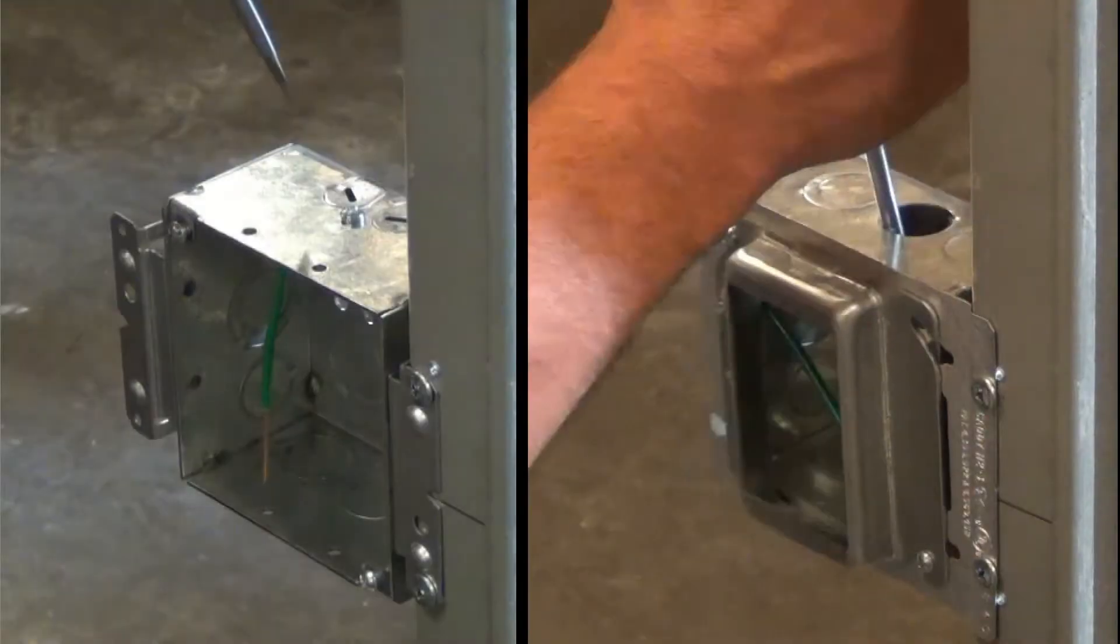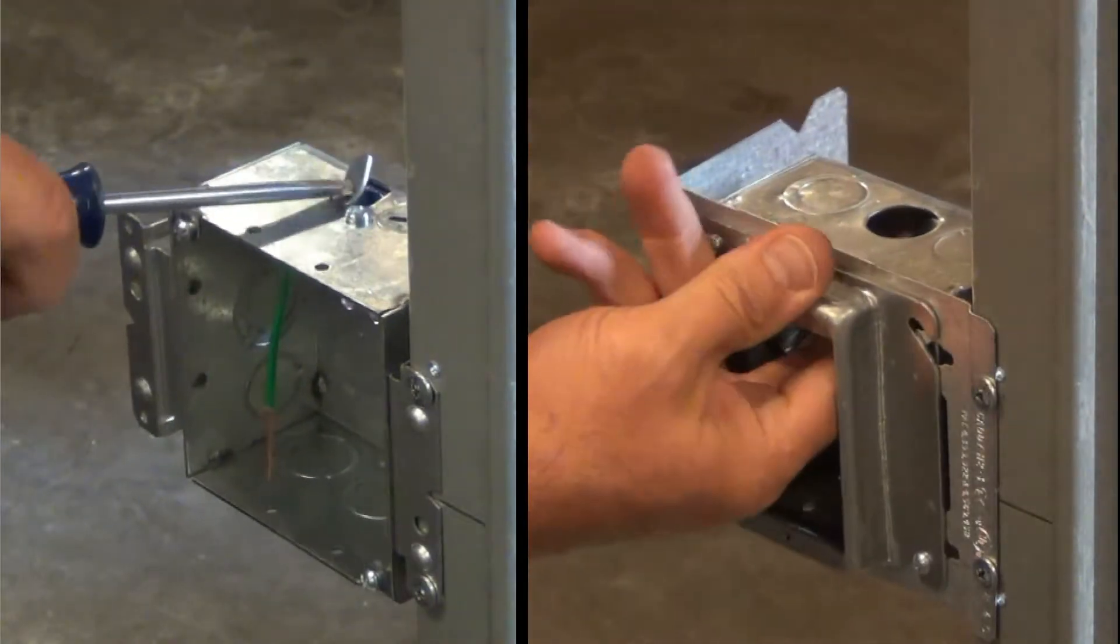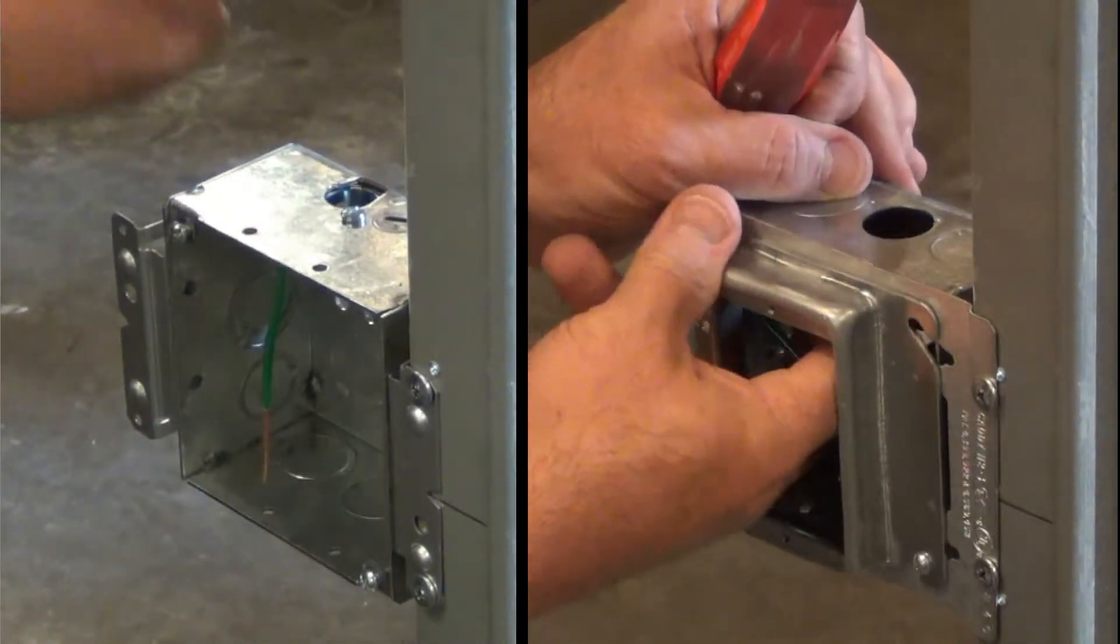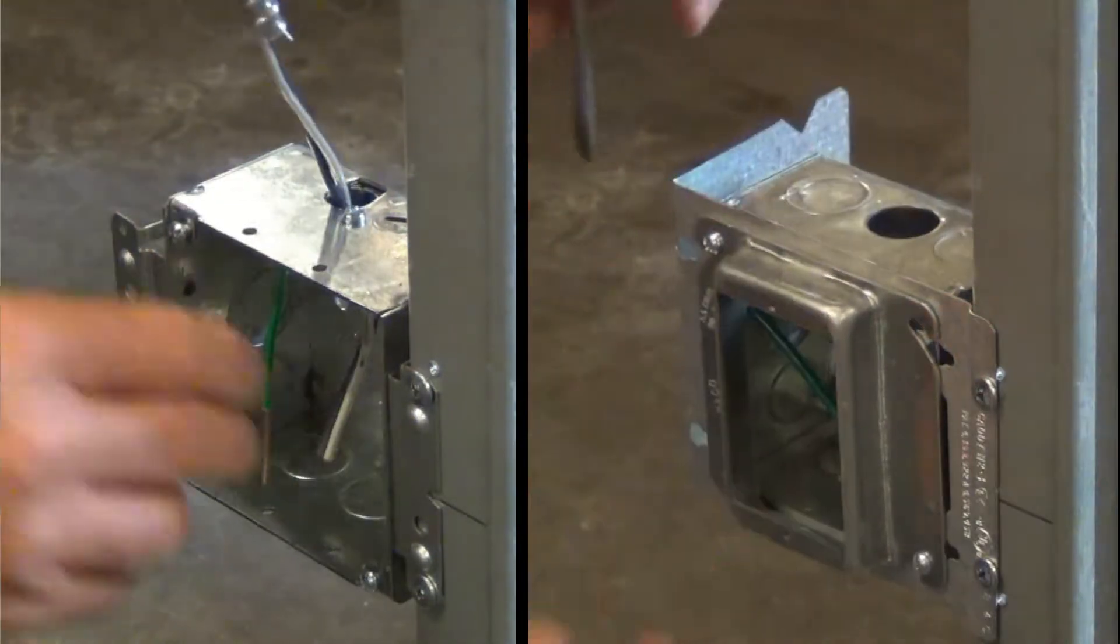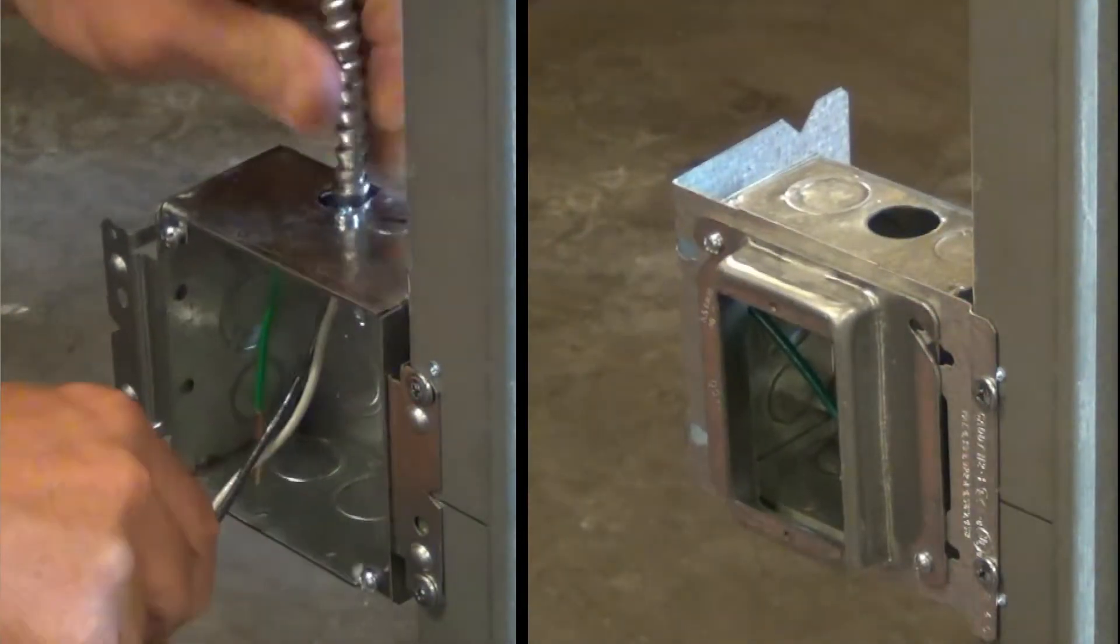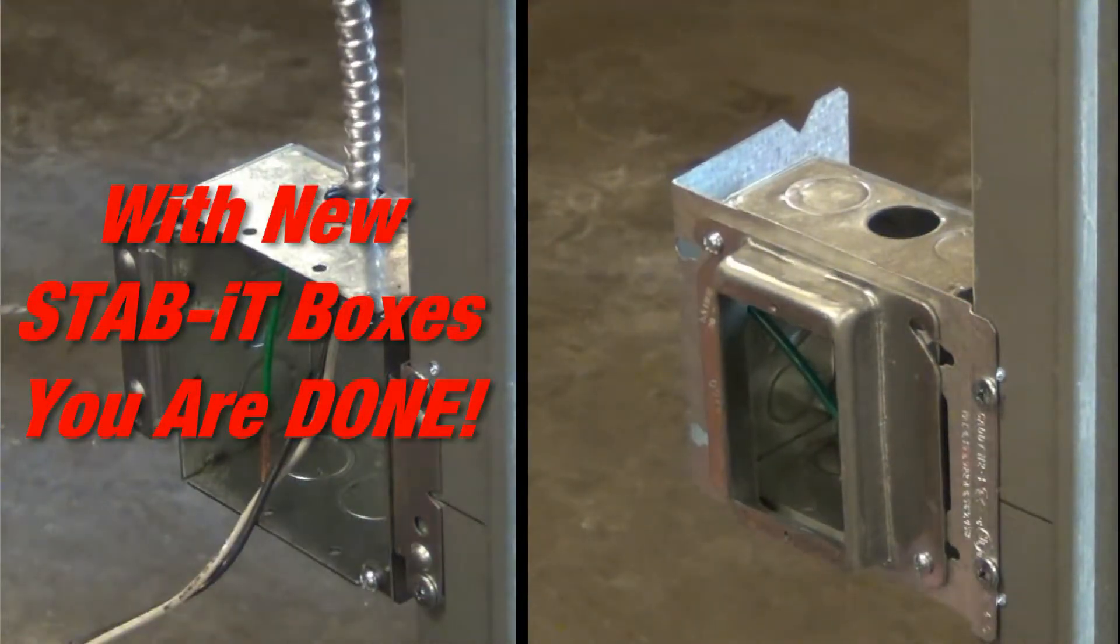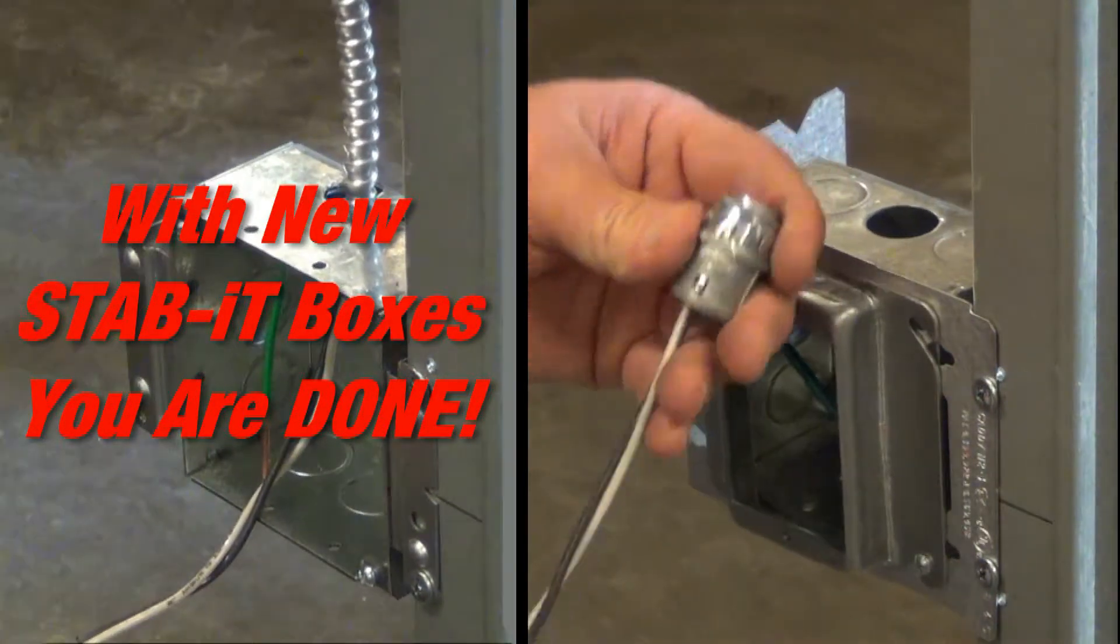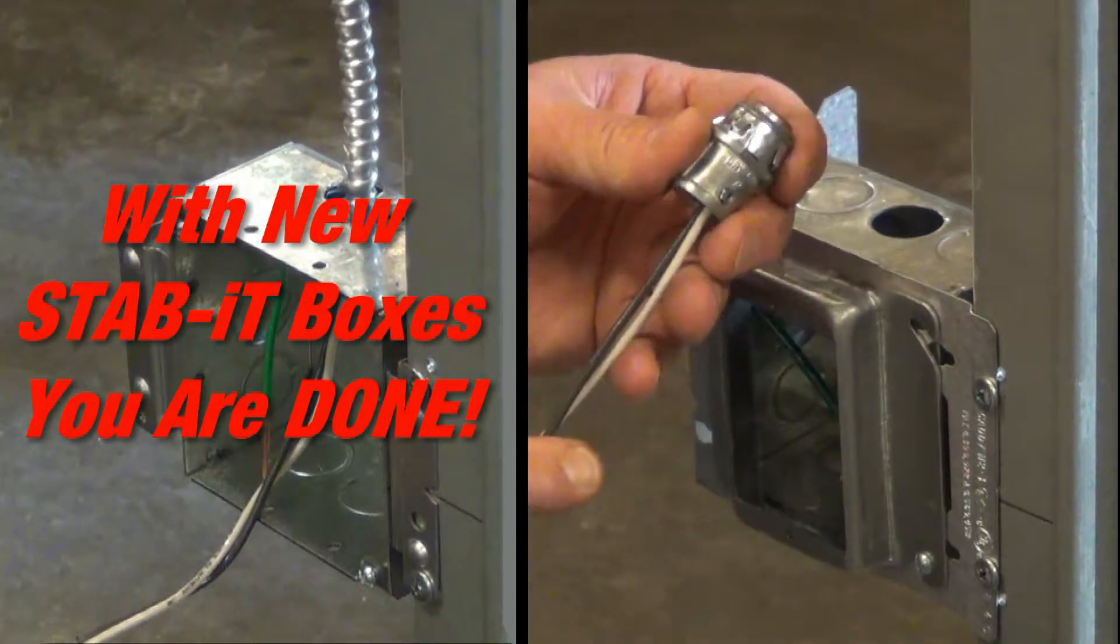In this side-by-side comparison, you can see that the pry-outs available with STAB-IT are faster to remove than knockouts, especially when mud rings are already installed. The pre-installed STAB-IT connector eliminates the extra labor and materials associated with traditional connectors.